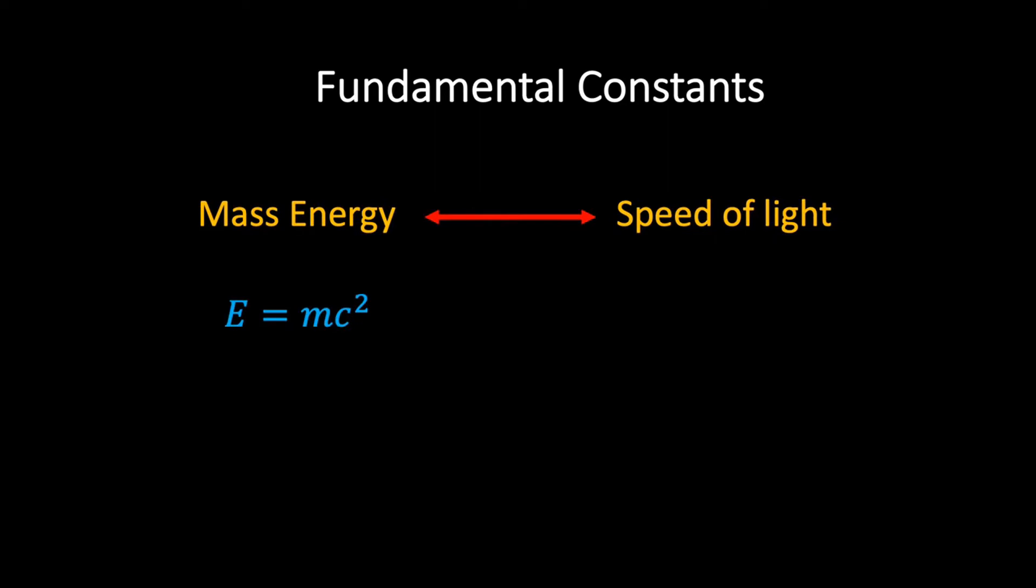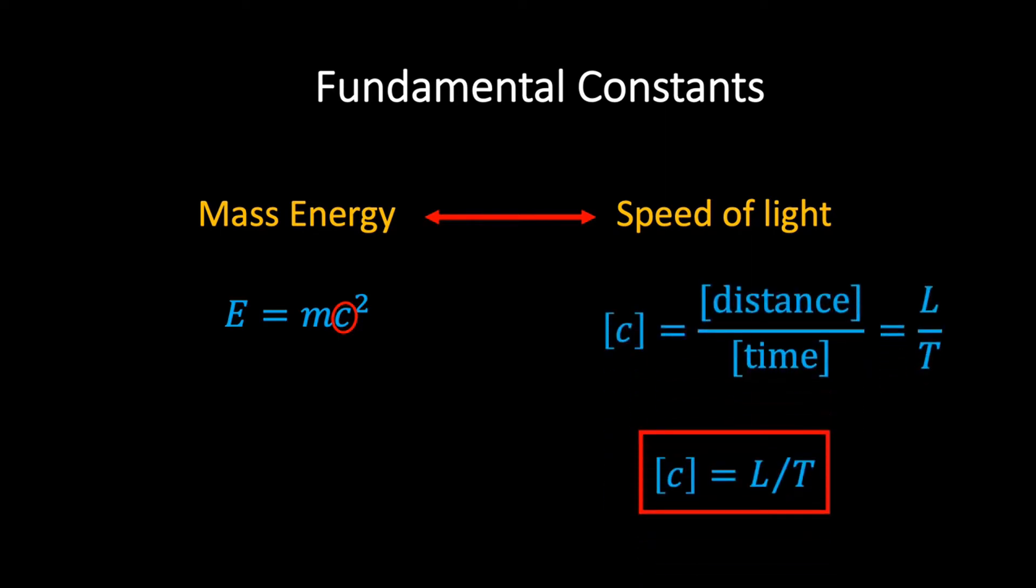This equation allows us to calculate the mass energy of an object if we know its mass. The speed of light c is a fundamental constant that tells us the exchange rate between mass and energy. Since c refers to a speed, the dimensions of c can be written as c equals L over T. We also note that we can use the equation E=mc² to determine the dimensions of energy, which can be written as ML² over T². Let's now use this dimensional information to explore some of the other fundamental constants that will prove crucial to our understanding of black holes.